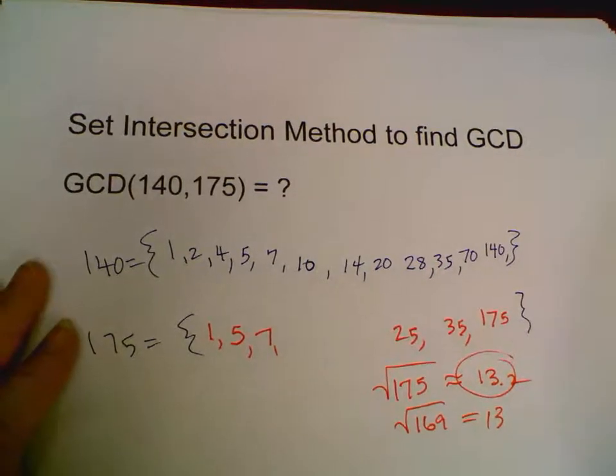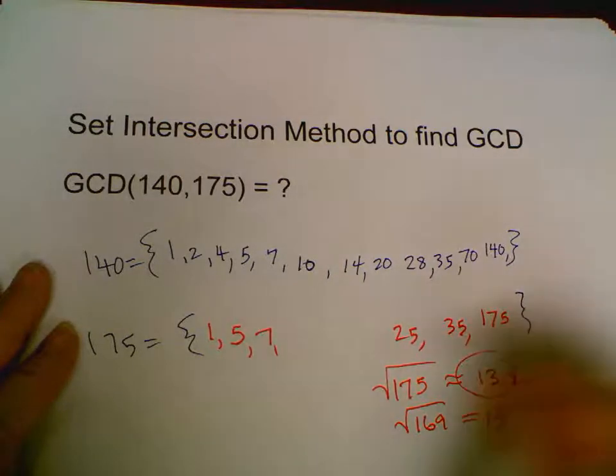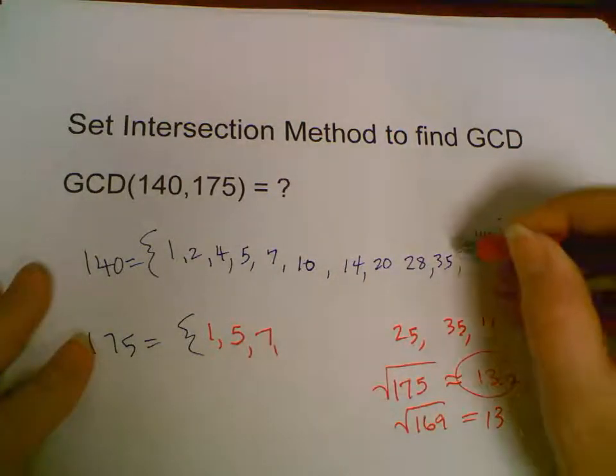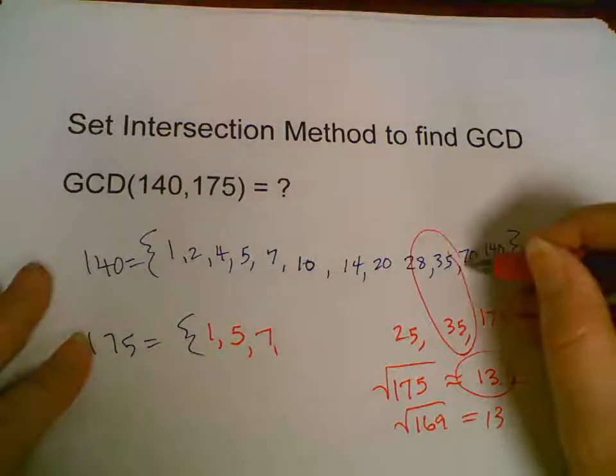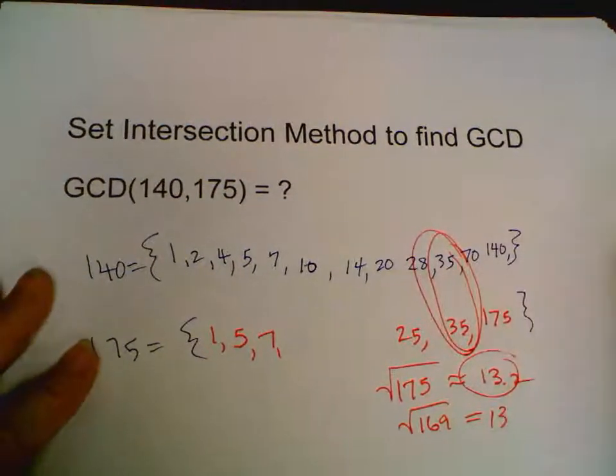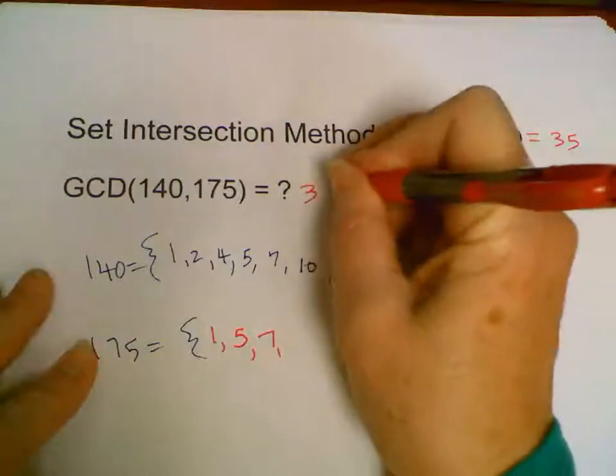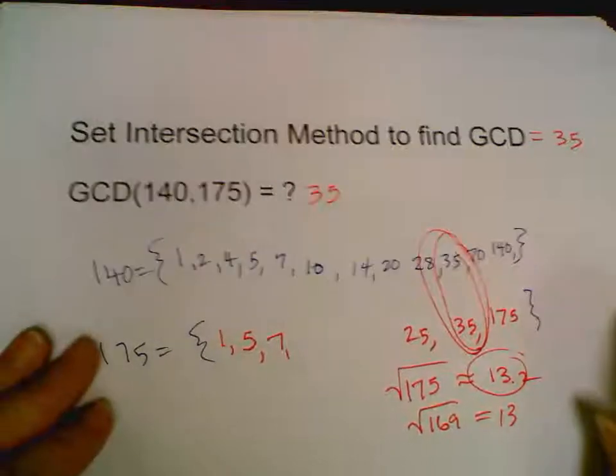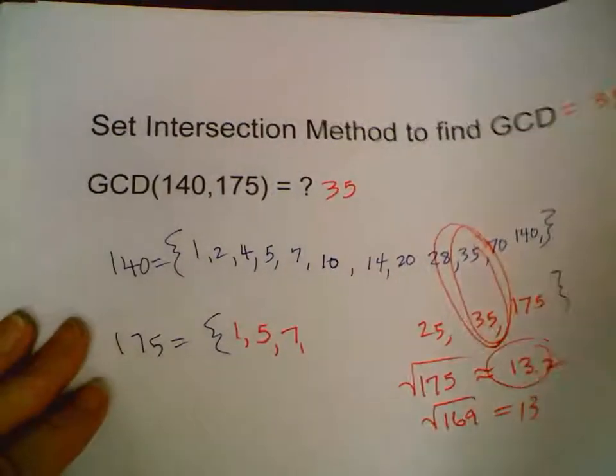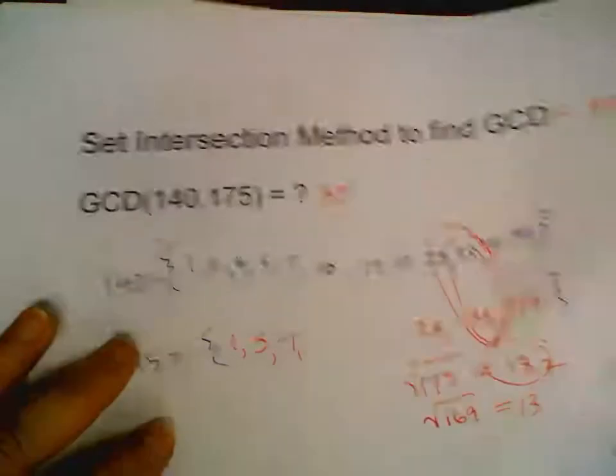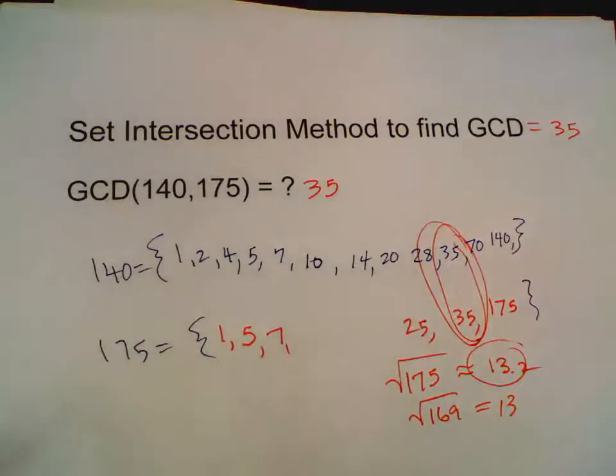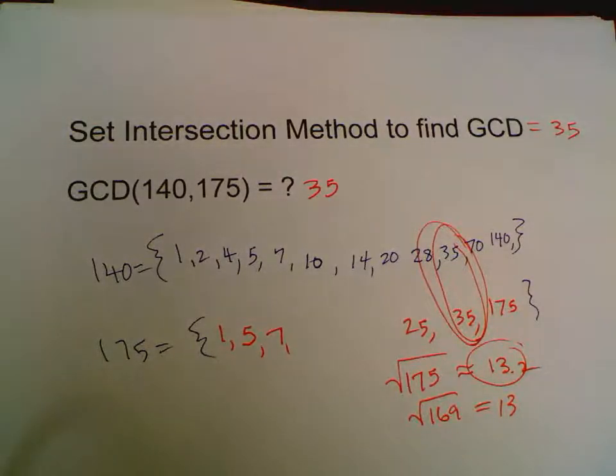What do they have in common? Sure, 5. Sure, 7. But the biggest number they have in common is 35. 35 is the greatest common divisor between 140 and 175. Let me stop here and in a different video show you the other methods.